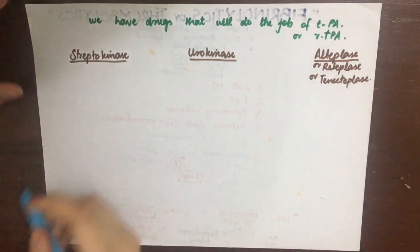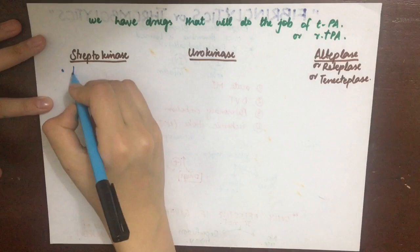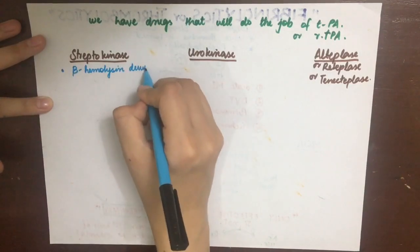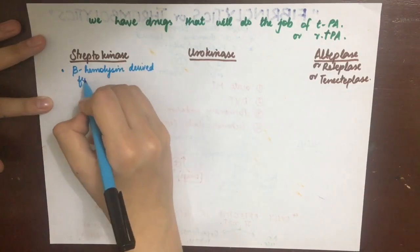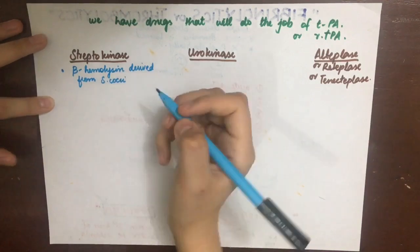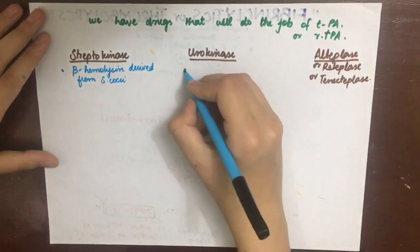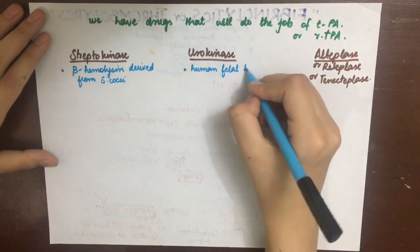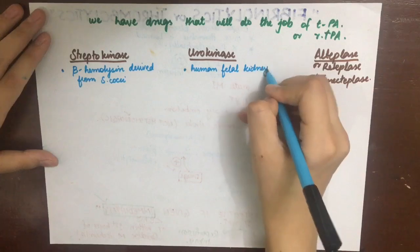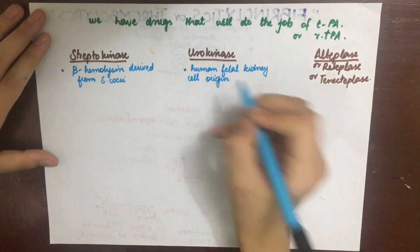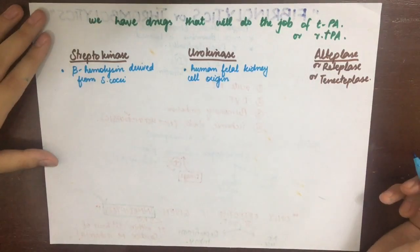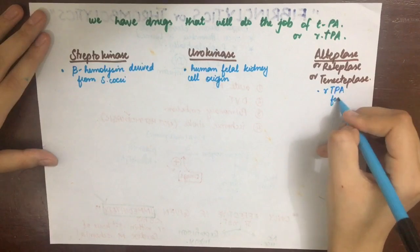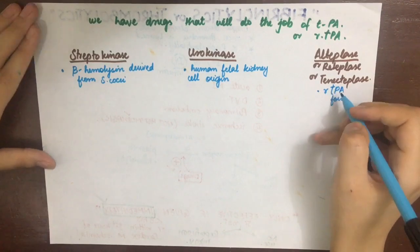Streptokinase is an enzyme produced by streptococci involved in the beta-hemolysis of blood. Urokinase is of human fetal kidney cell origin. Alteplase, reteplase, and tenecteplase are recombinant tPA forms.